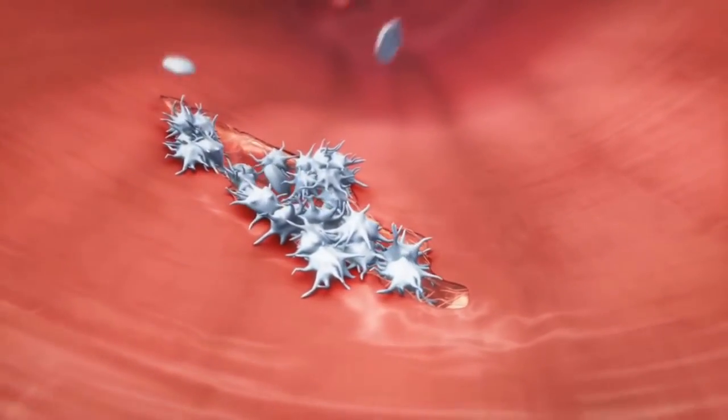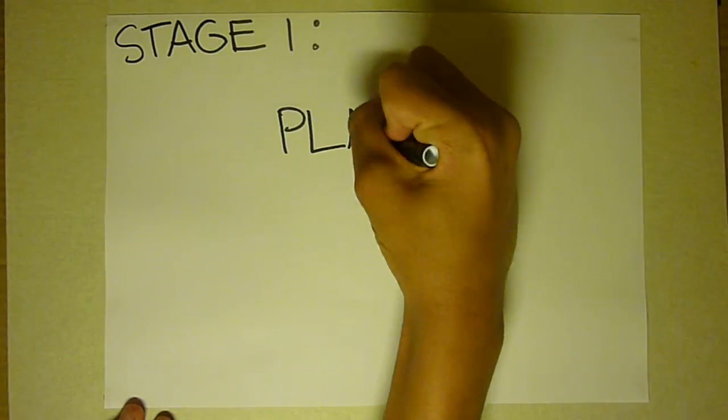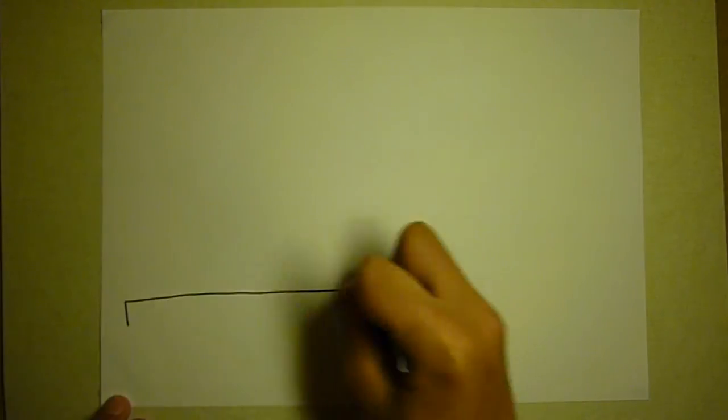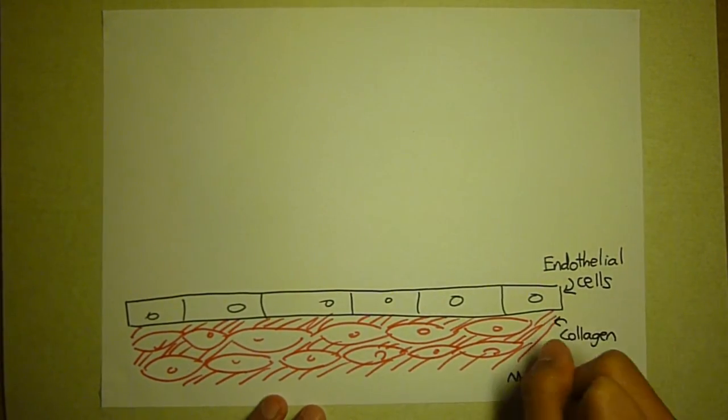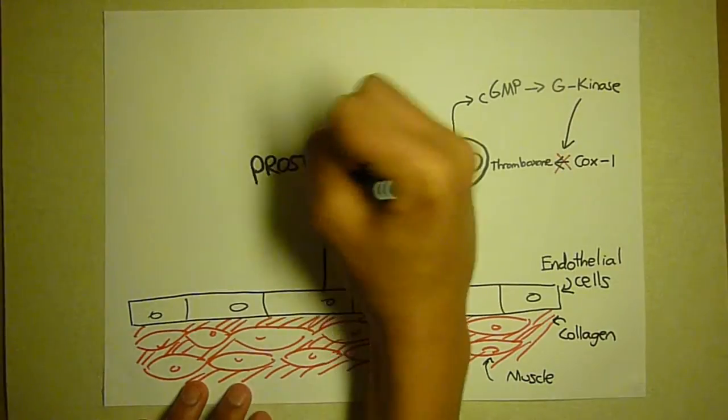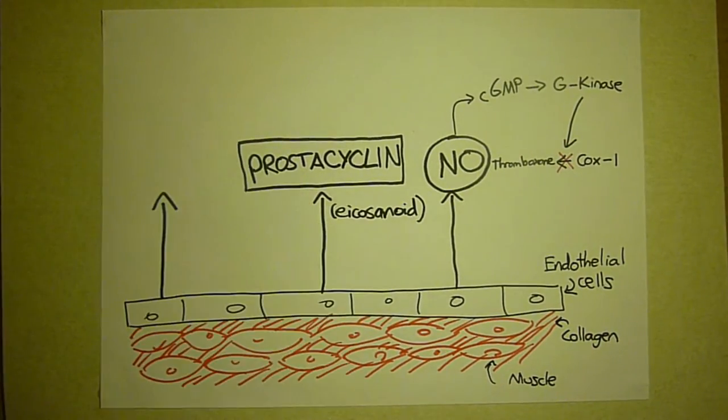There are three stages to clot formation. Stage 1: platelet plug formation. Normally, endothelial cells release protective chemicals to prevent clotting, including nitric oxide, prostacyclin (a lipid used in cell signaling), and a special intermediate complex called CD39.